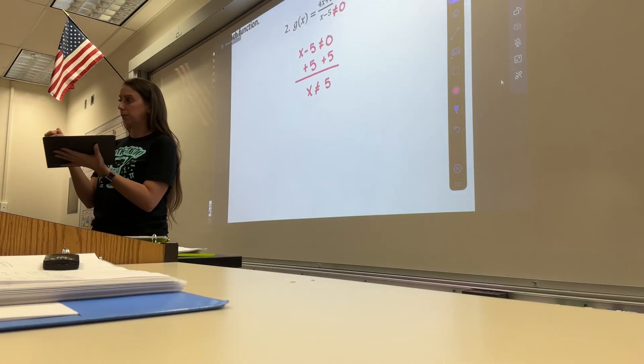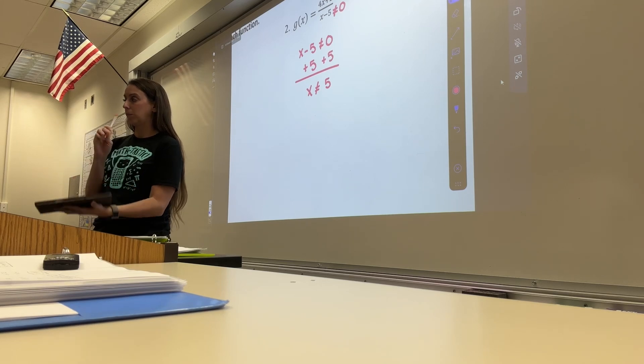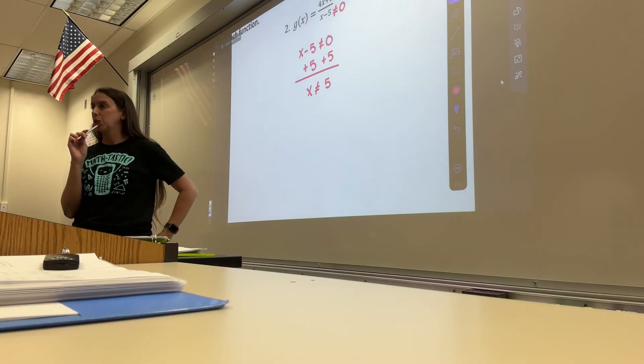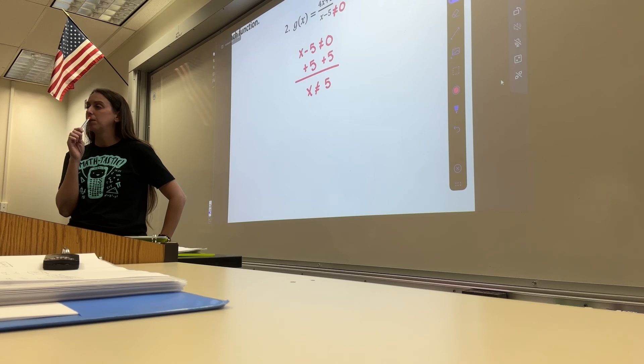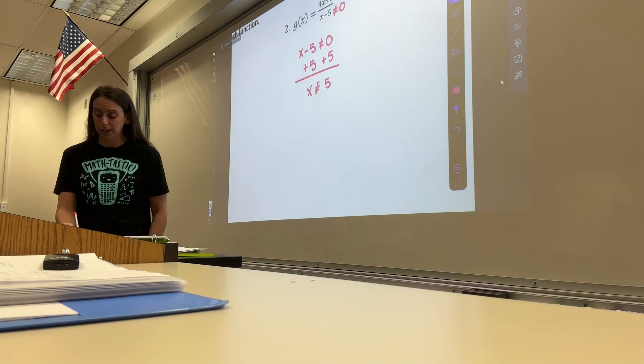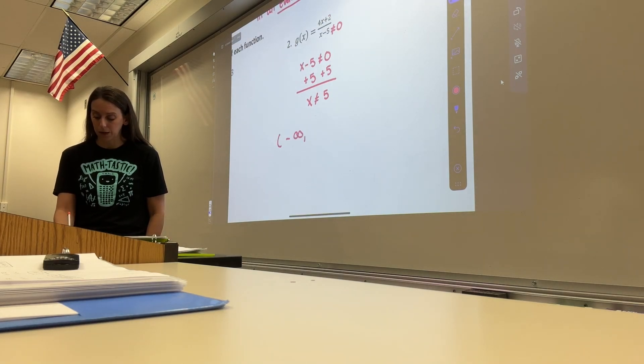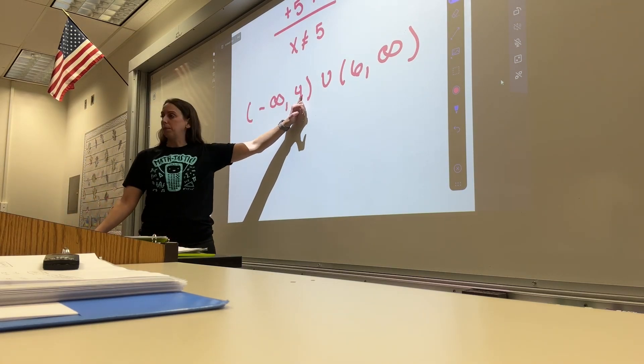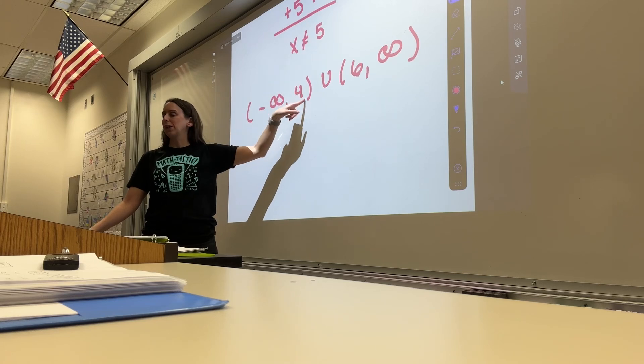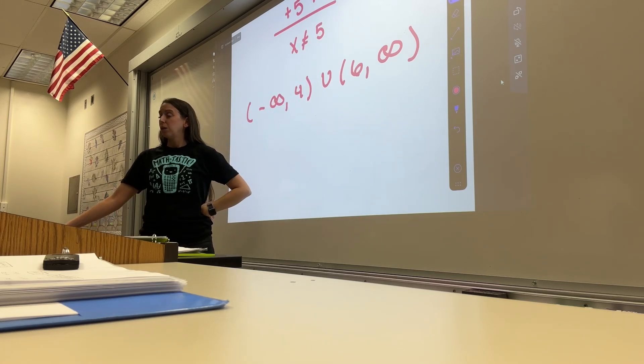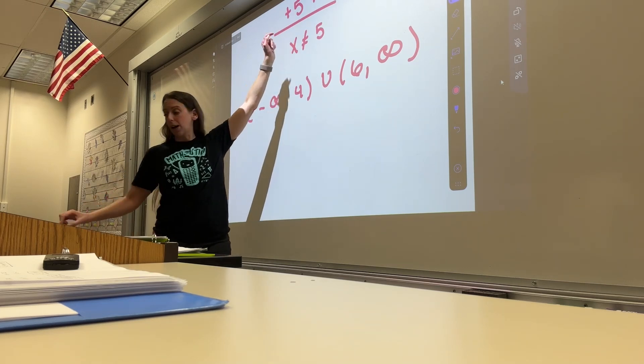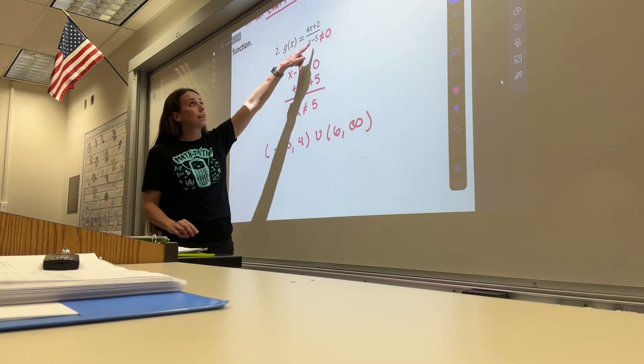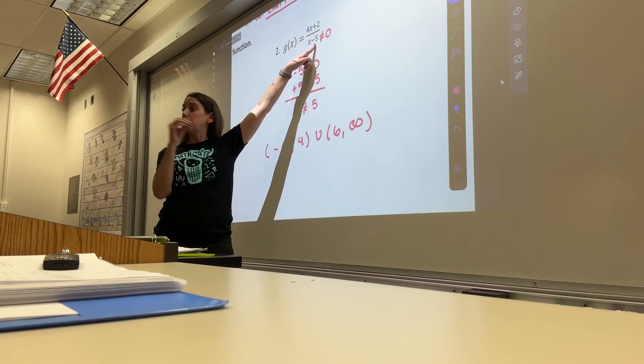So how do we write that in interval notation? So it just can't be equal to 5. You're really close. Don't write this down. We're going to just look at it. So negative infinity to 4 and 6 to infinity. Again, don't write this down because it's not the right answer. If it was negative infinity to 4, what numbers could work that I don't include in there? 4.9, right? Could this be 4.9? Where's my function? 4.9, 4.9 minus 5? That would be negative 0.1, and that's okay.